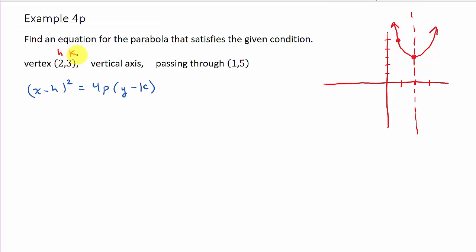All right, so let's go ahead and write this: x minus 2 squared equals 4p times y minus 3. So somehow I've got to solve for p. I've got to figure out what p is.